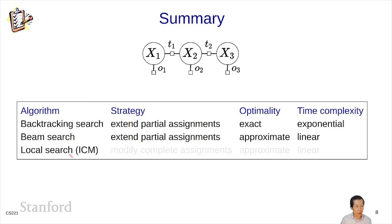And local search, we saw iterative conditional modes, which does local search by choosing the best value of a variable at each given time, is a different strategy. Here, we're starting with complete assignments and modifying them to make them better. So here, it's also approximate, but it's fast, just like beam search. That concludes this module. We'll see you next time.